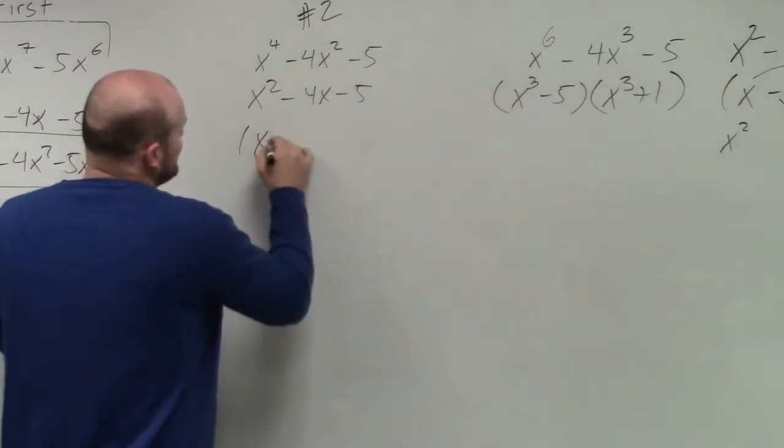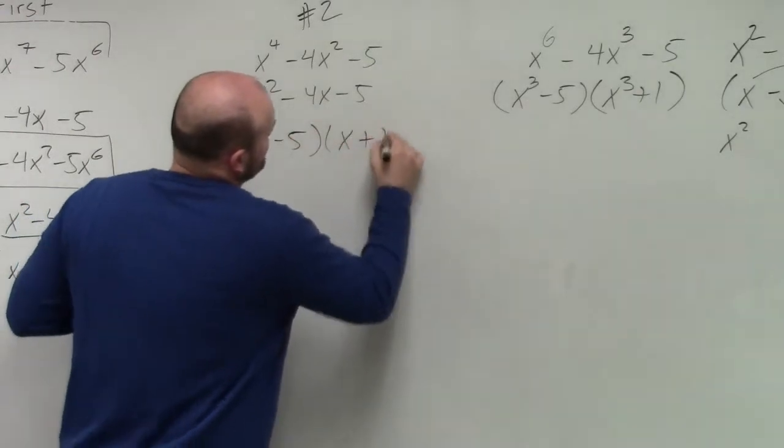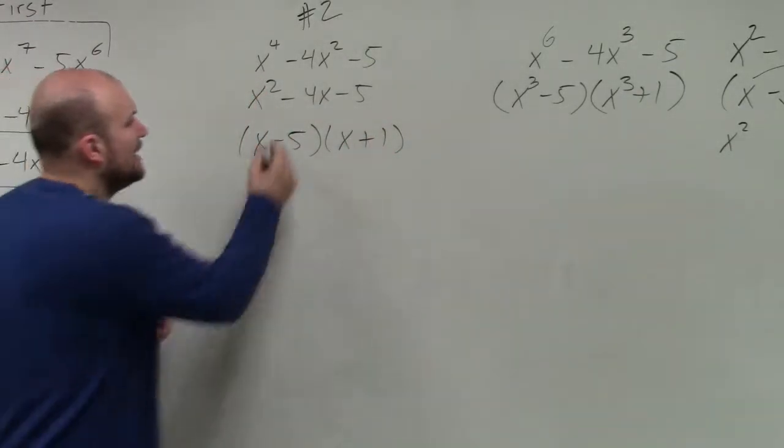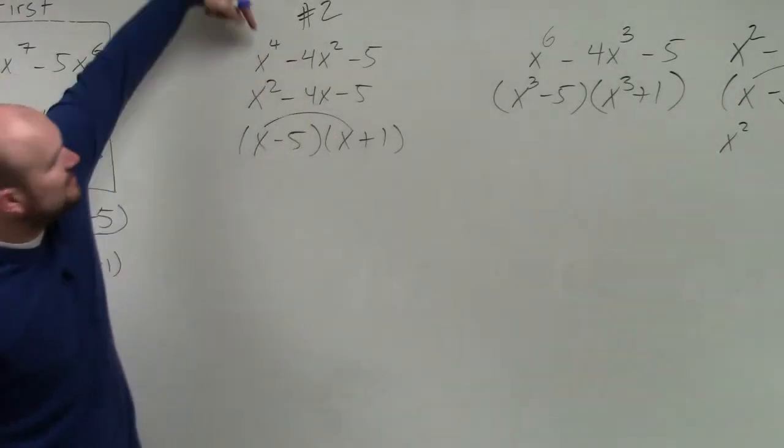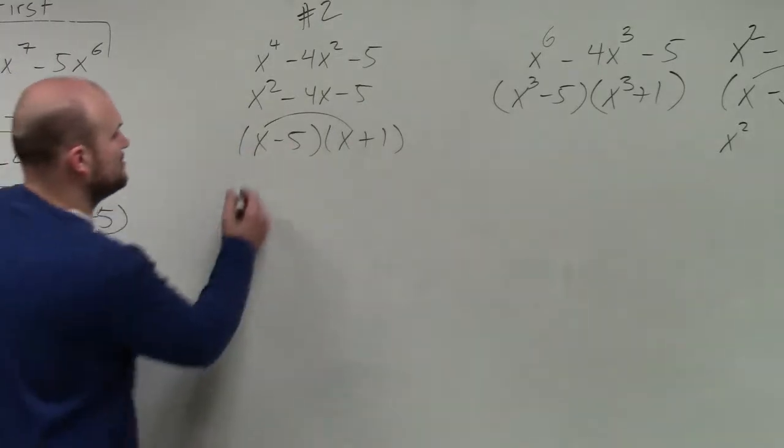This factored is x minus 5 times x plus 1. So all I got to do is say, all right, x times x gives me x squared. However, I want x times x to give me x to the 4th. So what should my first two terms be?